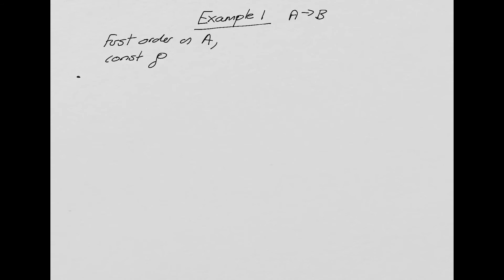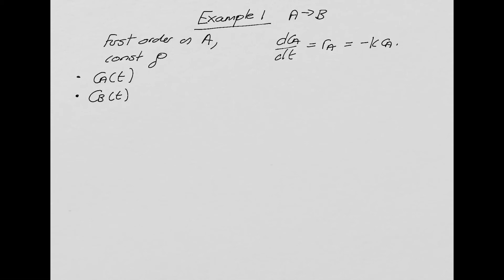What we want to find out is how the concentration of A changes with time, and then how the concentration of B changes with time. Working with a batch reactor at constant density, we can say dCA/dt = rA. Since the system is first order in A, rA = −kCA. I can then integrate that by separating variables, putting the CA terms together: dCA/CA = −k dt.